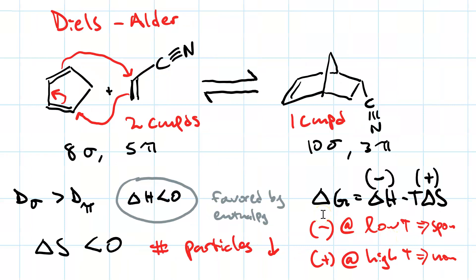So this reaction is spontaneous at low temperature when delta G is negative because delta H wins. And delta G is positive at high temperature because the product of T delta S becomes larger in magnitude than delta H, and entropy wins. What would happen if you reverse the reaction? Think about that. Here's a hint: you reverse the temperature at which delta G is positive and negative.